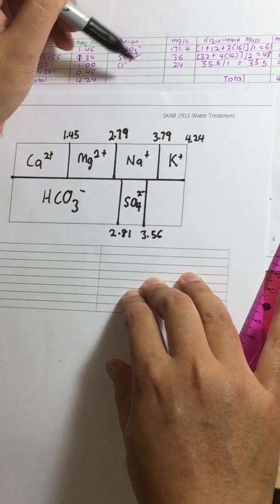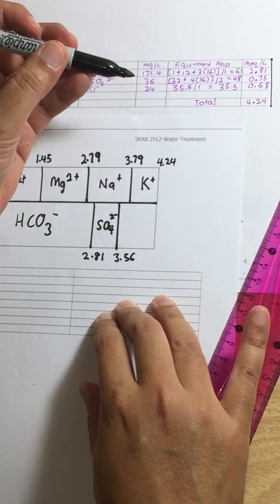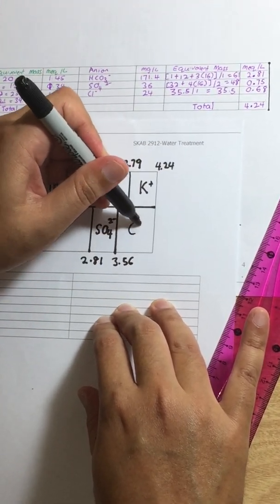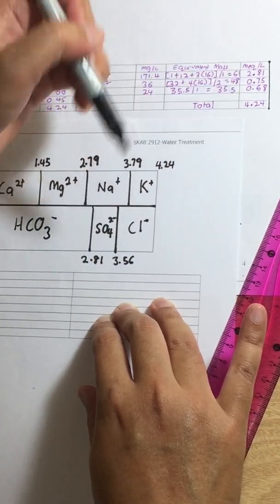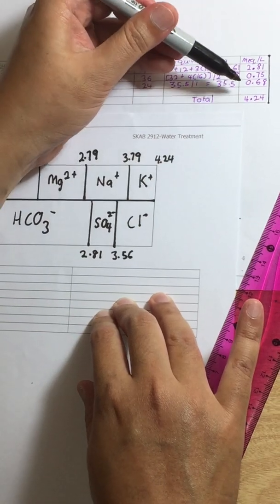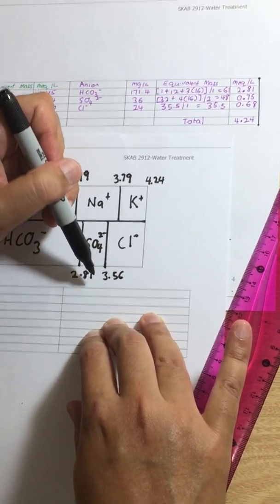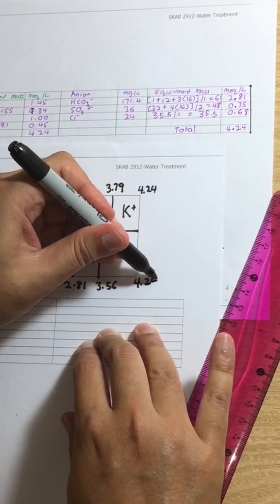And the last part is chloride ion. And the concentration is 0.68. So chloride is like that. And 0.68 plus 3.56. So I'd like to repeat it again. So 0.68 plus 3.56 is 4.24.